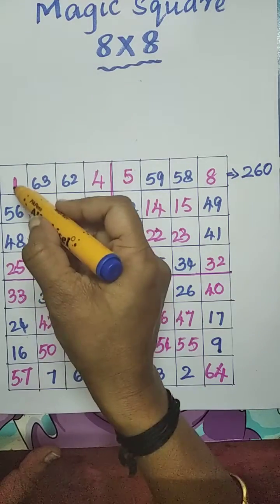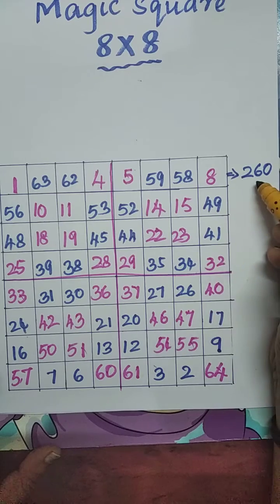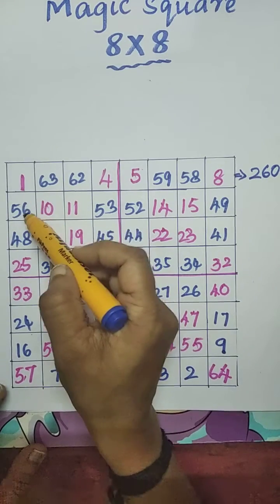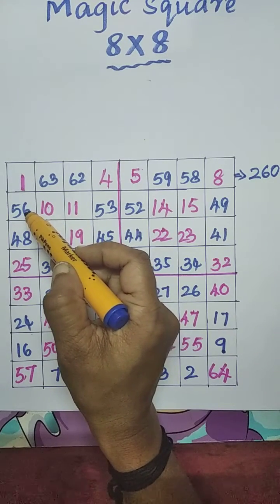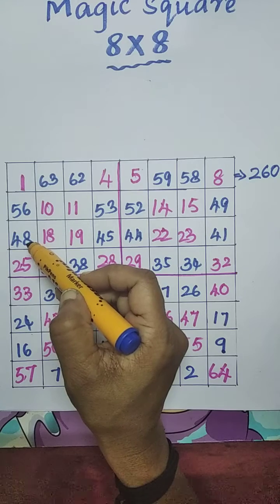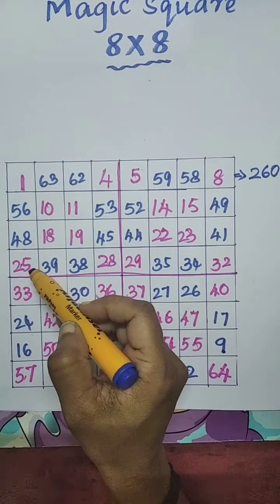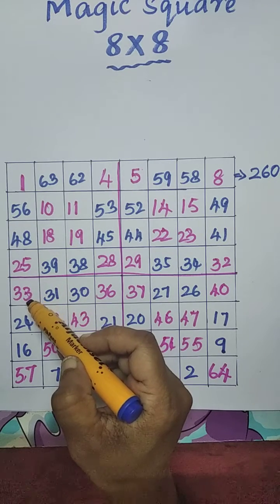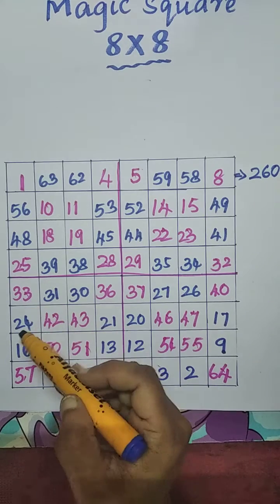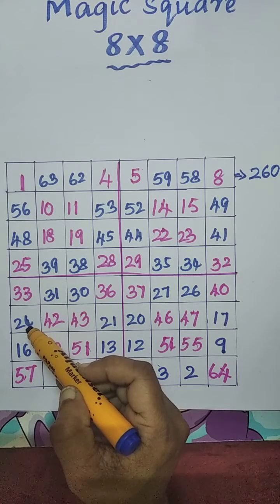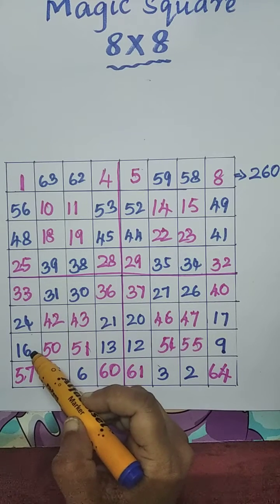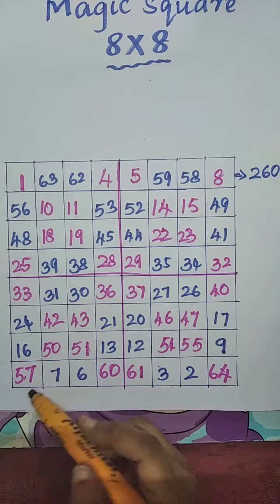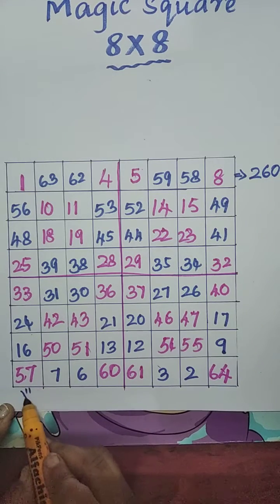Let us check now column wise. If the sum is equal to 260, then our magic square is perfect. 1 plus 56, 57. 57 plus 48, 105. 105 plus 25, 130. 130 plus 33, 163. 163 plus 24, 187. 187 plus 16, that is 203. 203 plus 57, that is 260.